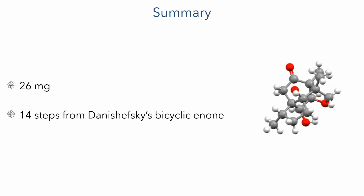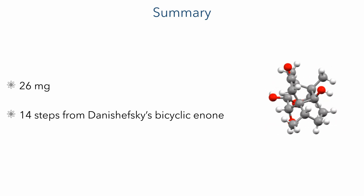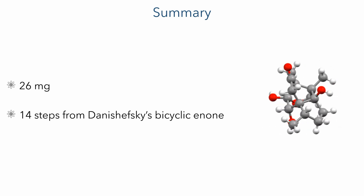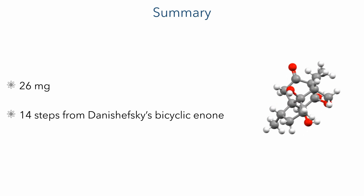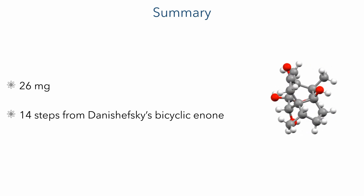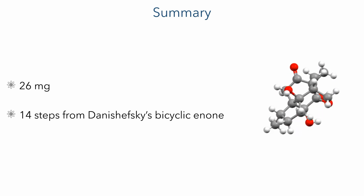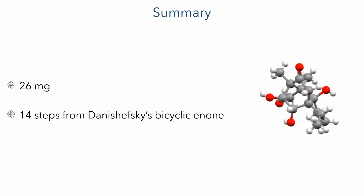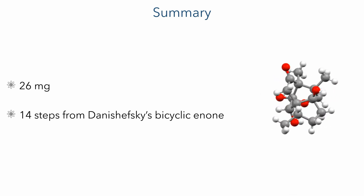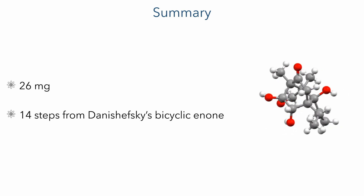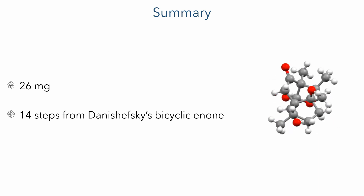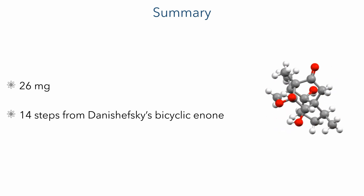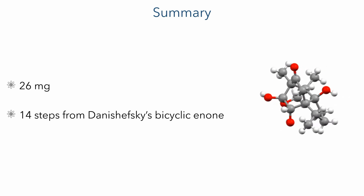Overall, the authors managed to produce 26 mg of this highly complex target in only 14 steps from the bicyclic enone reported by Daniszewski. The highlights of this synthesis are the highly unusual palladium(II)-catalyzed enyne cyclization, the titanocene-mediated reductive carbonyl coupling, and the highly stereoselective manipulations. This synthesis presents a new strategy towards constructing these highly complex tetracyclic molecules and will allow scientists to discover the full range of possible biological activities of these interesting molecules.